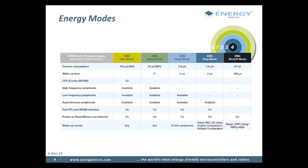Out of reset, the EFM32 is in energy mode 0, also called the active mode or the run mode. In this mode, the CPU is active and all peripherals can be enabled. Power consumption down to 150 microamps per megahertz is possible in this mode. The next energy mode, EM1, is entered when we put the CPU to sleep. All other peripherals can be enabled in this mode and current consumption is as low as 45 microamps per megahertz. For instance, while receiving a large chunk of data over a UART, the MCU can be in EM1 while the DMA transfers data from the UART peripheral to the RAM.